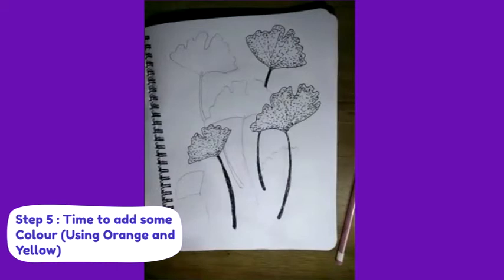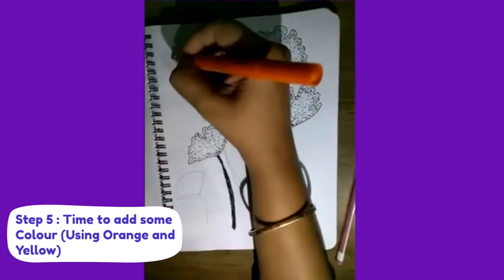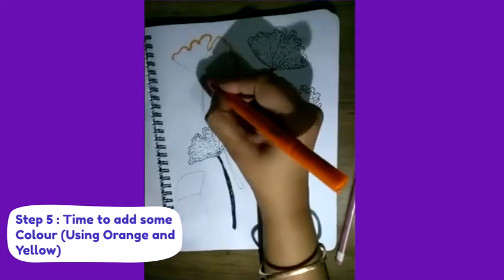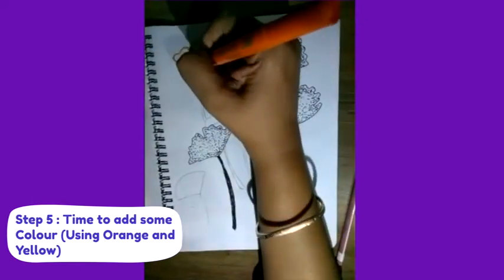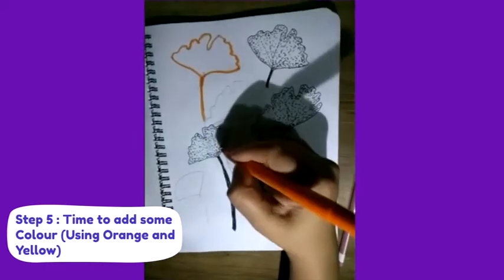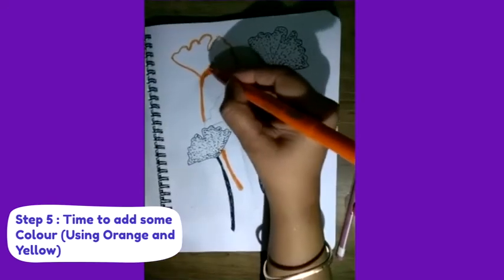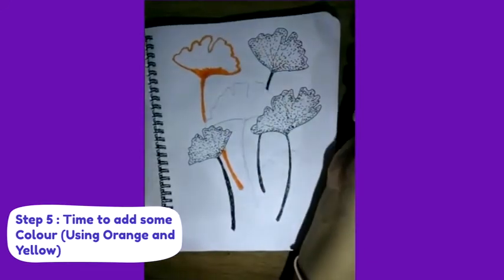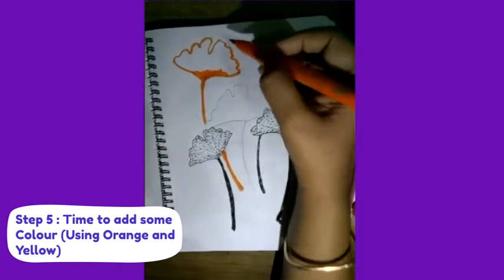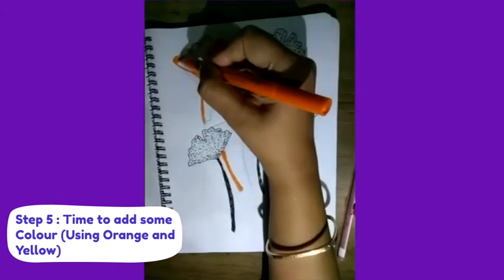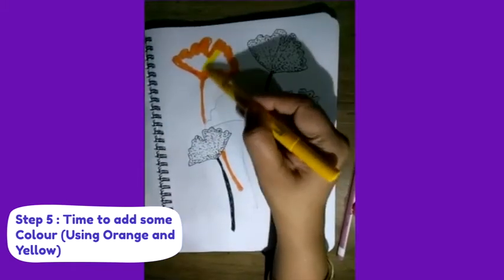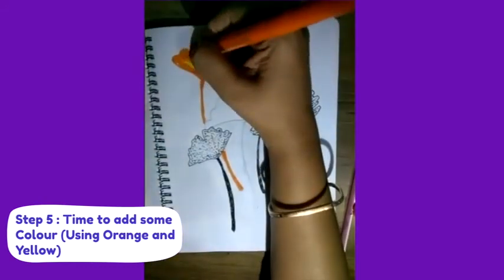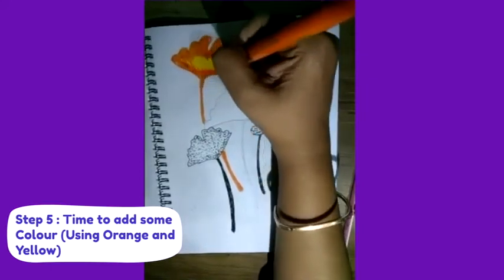Now I have taken an orange color sketch pen. You can take the same orange and outline the top flower. Now from below, I am coloring it with the same orange color. Fill the remaining flower with yellow color.